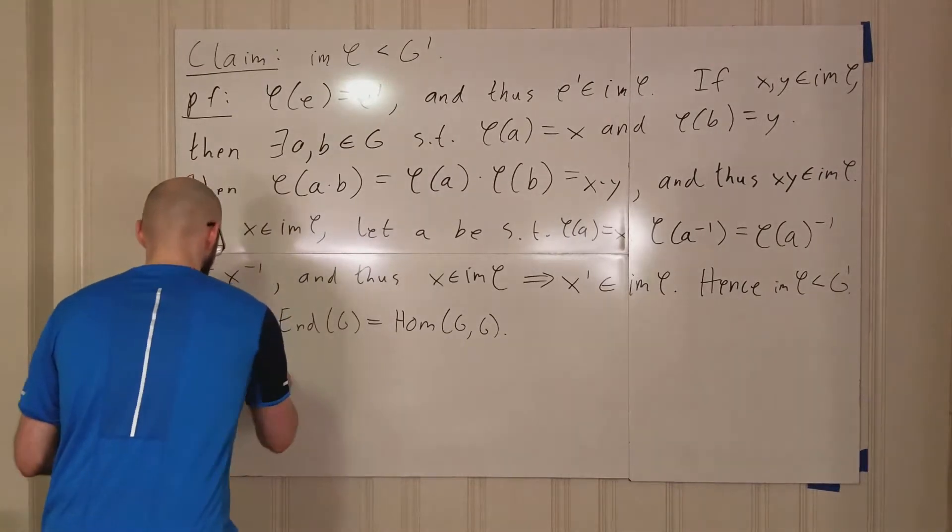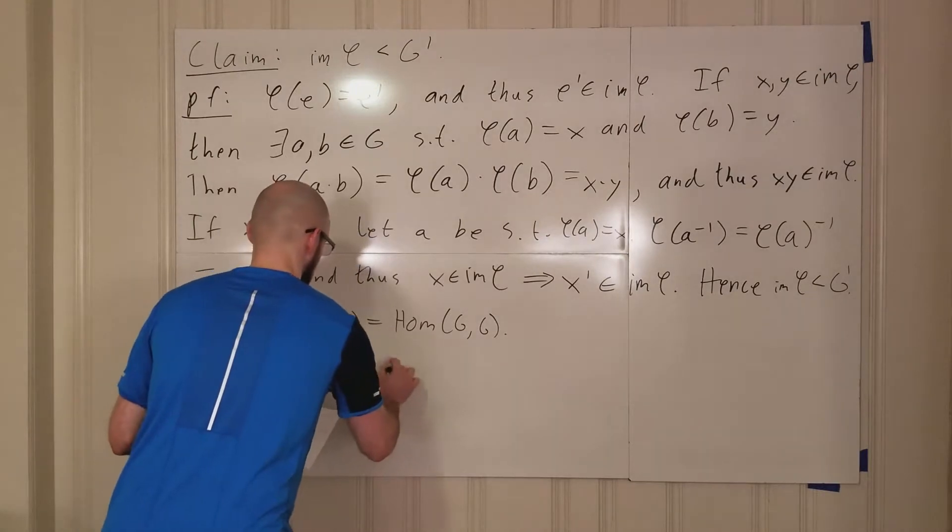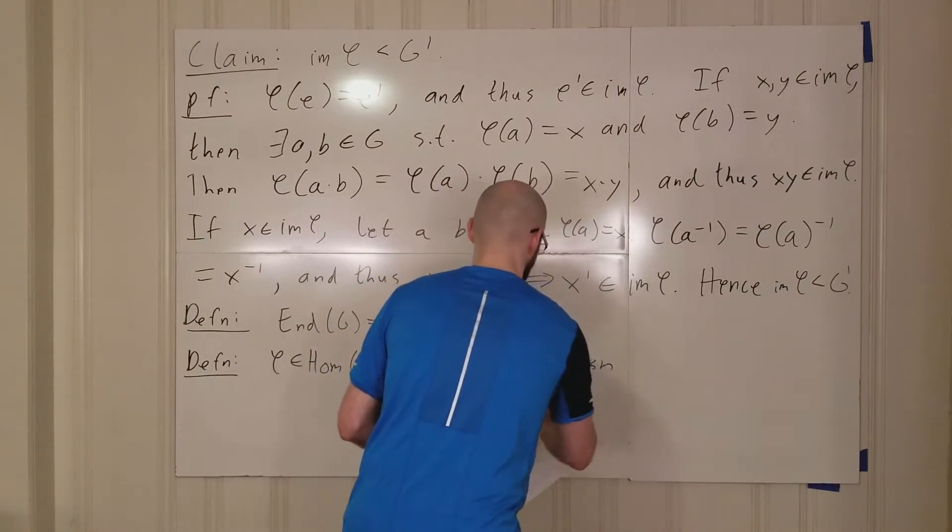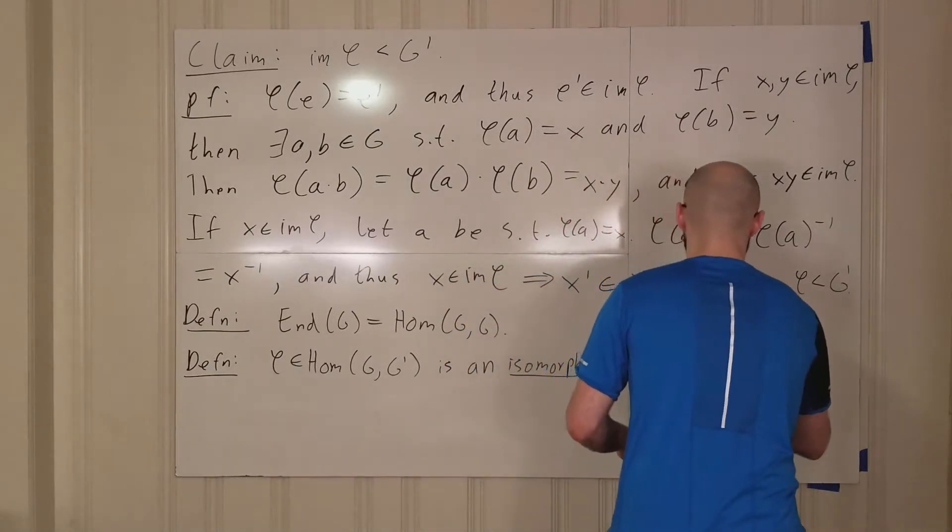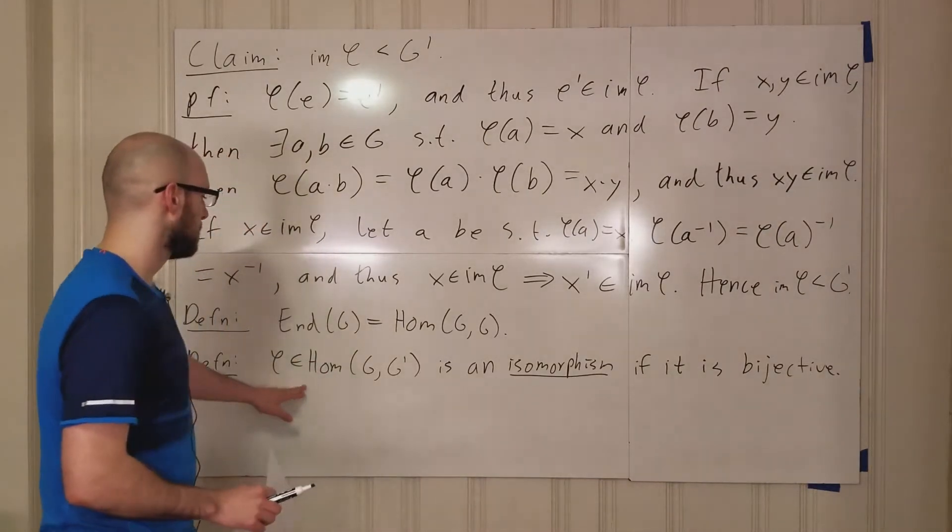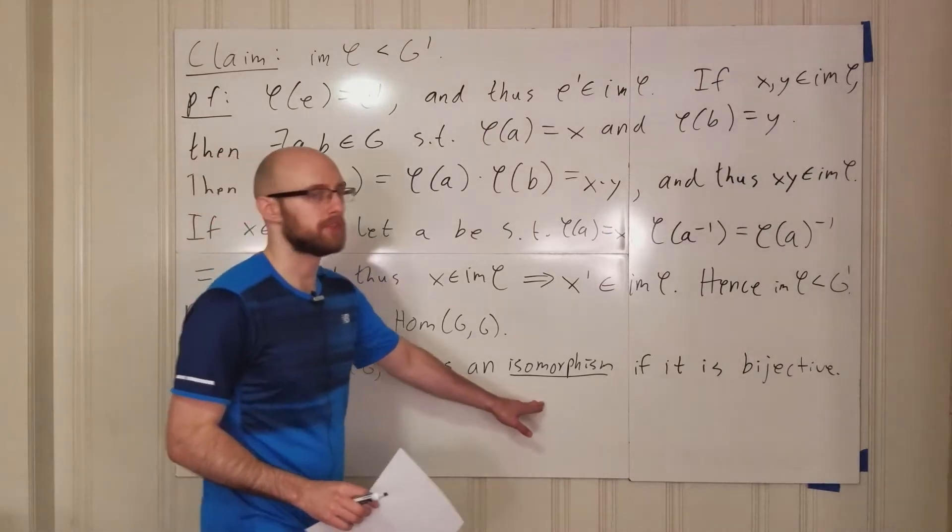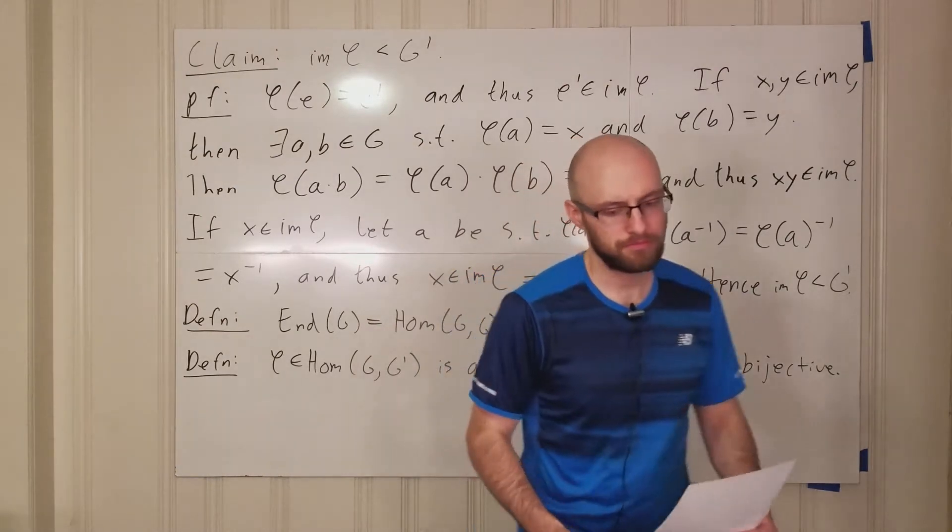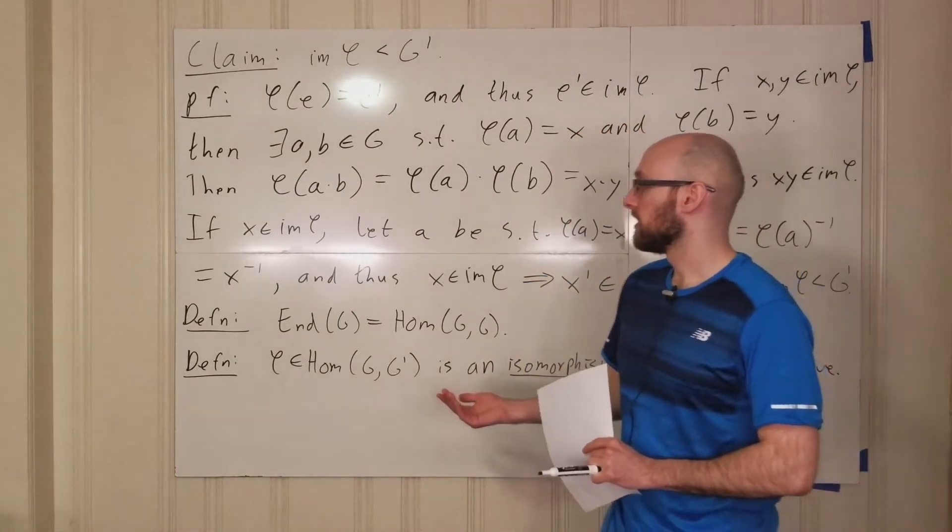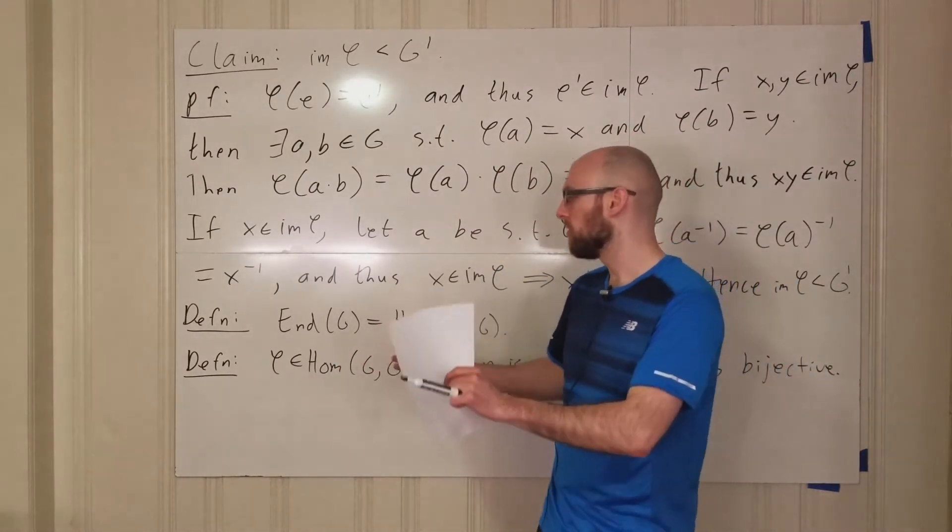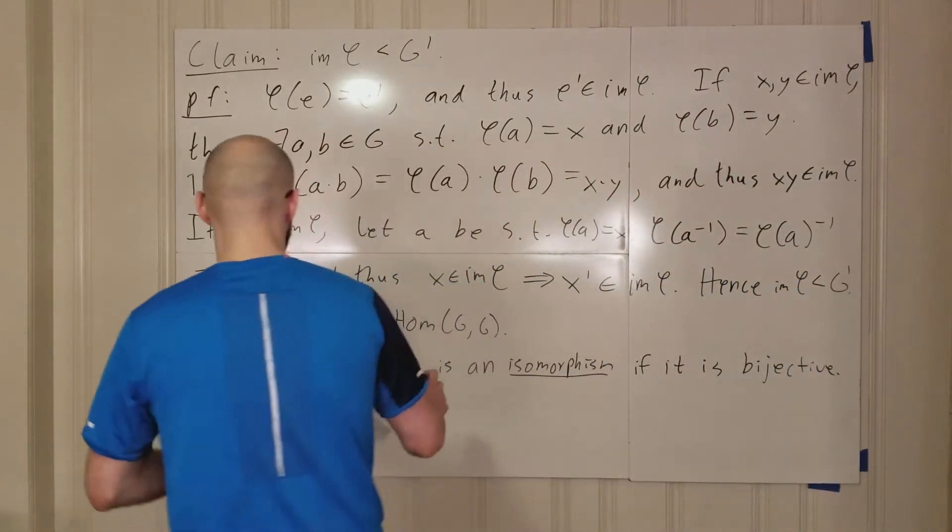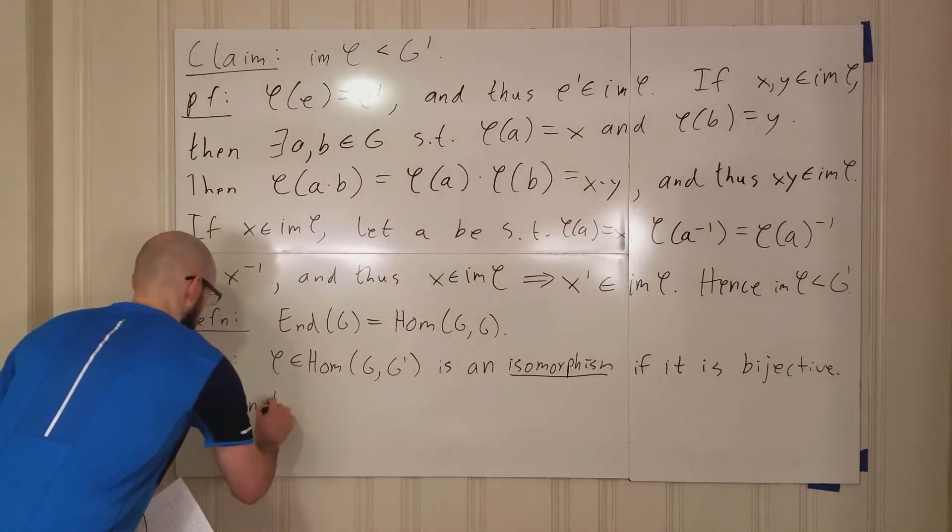Another definition: Phi in Hom G G prime is an isomorphism if it is a bijective map. So, if it is bijective. And, of course, equivalently what we could say is, Phi is in Hom G G prime is an isomorphism if... Well, instead of saying just that it's bijective, another thing that also means is that there exists a homomorphism from G prime into G, such that if you compose those two maps, Phi and Phi prime in either order, you get the identity map. So, I'll write that out because that was a lot.